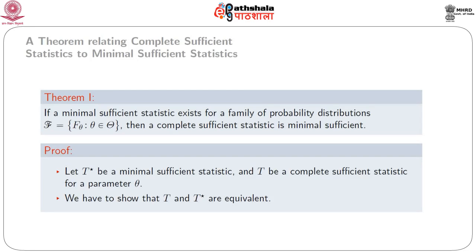First we shall discuss a theorem relating complete sufficient statistics to minimal sufficient statistics. If a minimal sufficient statistic exists for a family of probability distributions, say script F equals {f_θ : θ ∈ Θ}, then a complete sufficient statistic is minimal sufficient. Let us consider a proof of the theorem. Let t* be a minimal sufficient statistic and t be a complete sufficient statistic for the parameter θ.